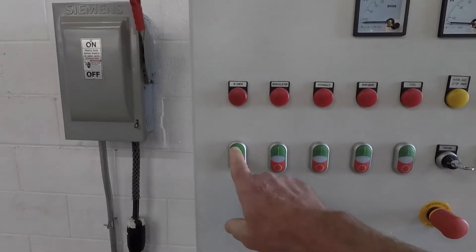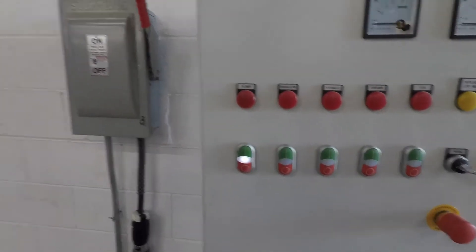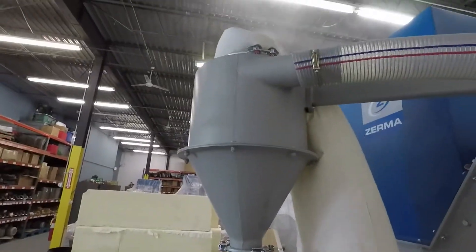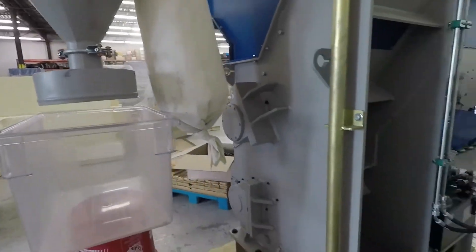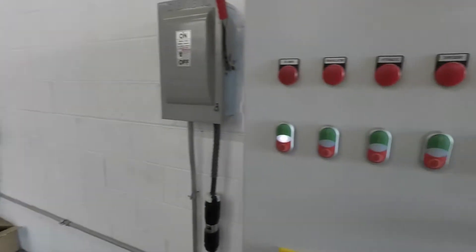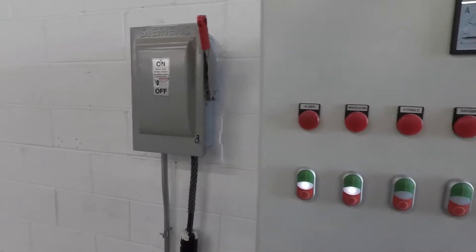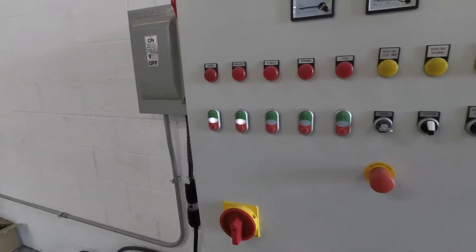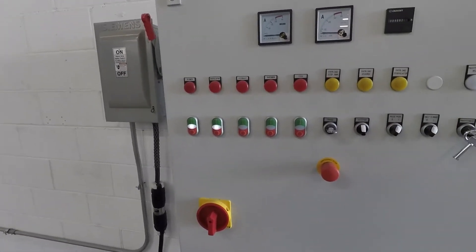And then you sync it, start it. First we start the blower, start the blower system. Then we go ahead and start the granulator. Usually let that run for 30 seconds to a minute to clean out anything that might be in the system.